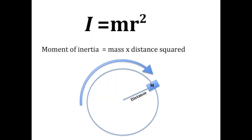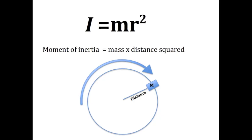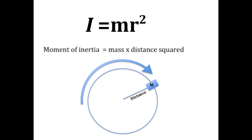To start, let's not look at the whole mass turning — let's look at the mass of just a single point. This equation tells us that the moment of inertia equals mass times distance squared. This means the further the mass is away from the center of rotation, the more force is going to be needed to make it move.